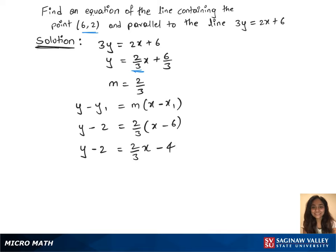In our next step, we'll add 2 on both sides, which gives us y equals 2 over 3x minus 2. That's the solution.